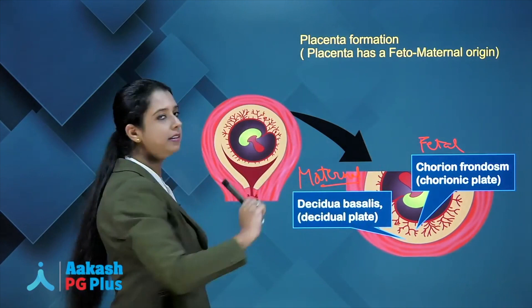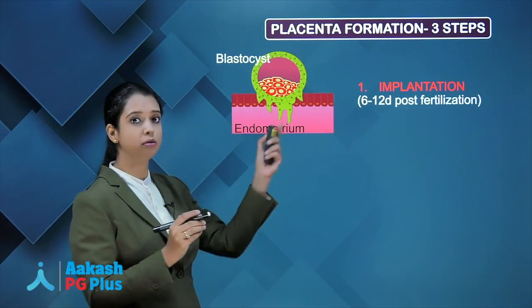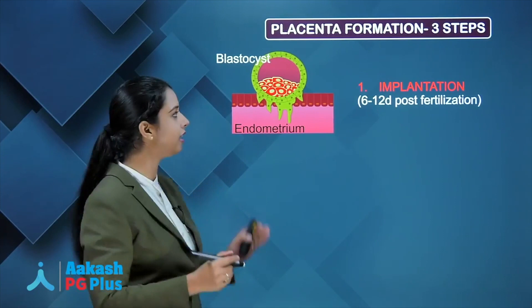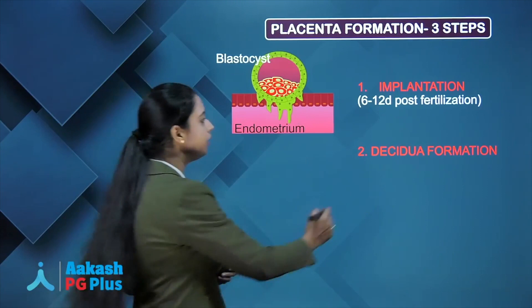The place where it is implanted in the mother is the decidua basalis or the decidual plate. That decidual plate is the maternal part. This is how placenta is made of fetomaternal origin. Placenta formation has 3 important steps. The first step is implantation — the attachment of the blastocyst to the endometrium and then further invasion inside the endometrium, occurring at 6 to 12 days post fertilization.